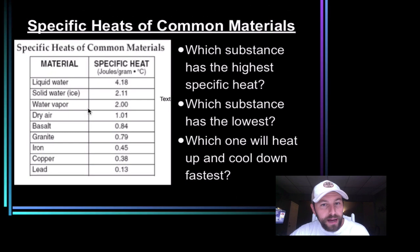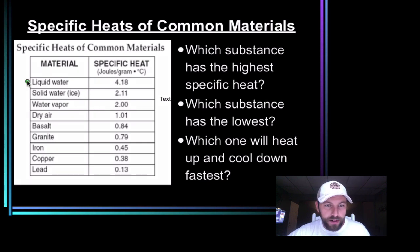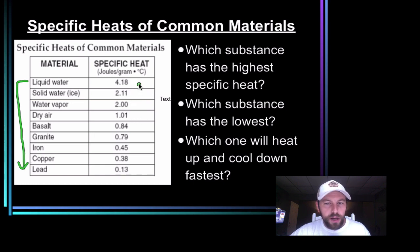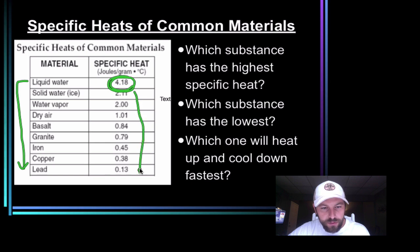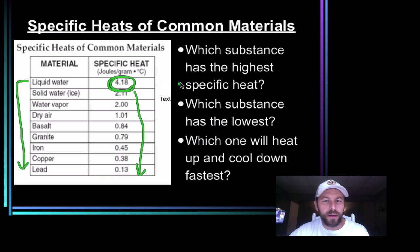Getting back, we can look at the specific heats of common materials on our Earth Science reference table, comparing everything from liquid water all the way to lead. If we also look at this, we should notice a little bit of a pattern. The higher the substance's specific heat are going to be located on the top, moving down towards substances with the lower specific heat. We can look and compare these.